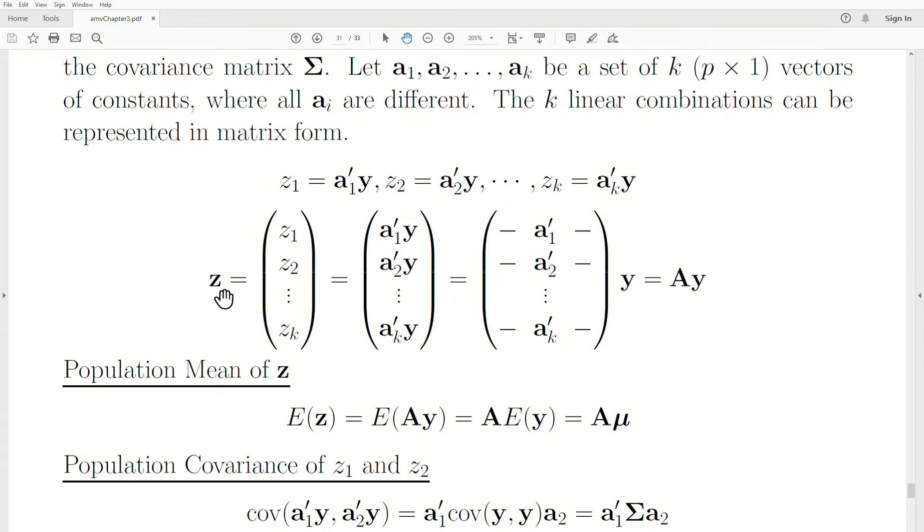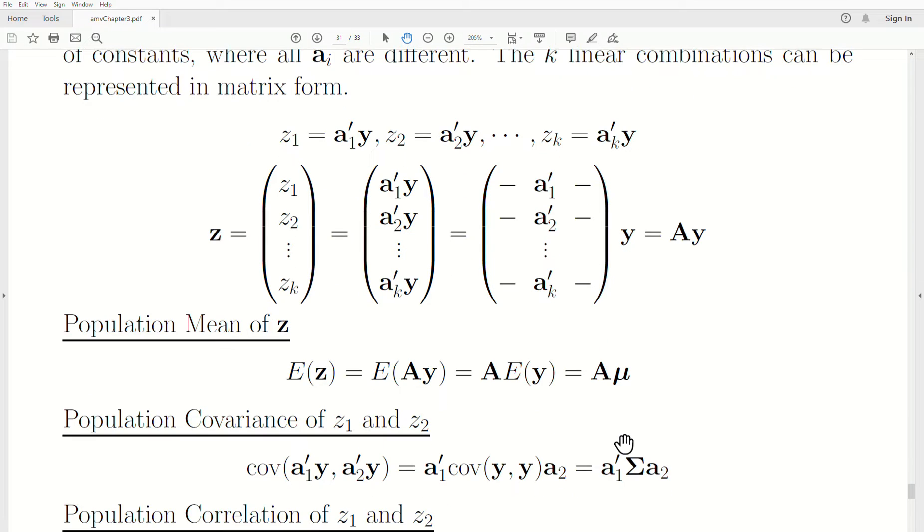Now we can calculate the mean of our random vector z. So the expected value. Remember, we're talking about population parameters. We replace what z is, which is A times y. And A is a matrix of constants and doesn't play a part in expectation. Expectation is for random variables. So we can factor out the A, and the expected value of y is just the mean vector. So the mean of z is A times mu.